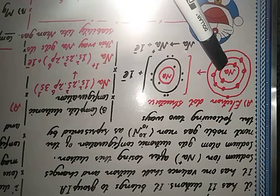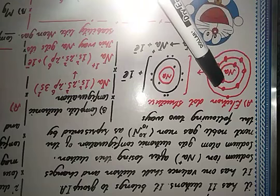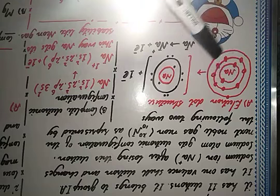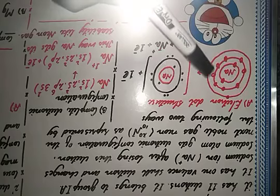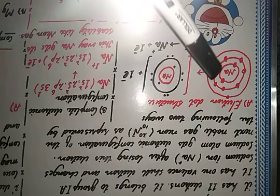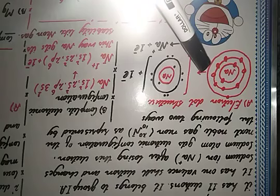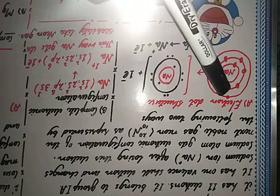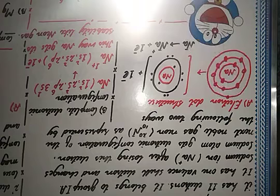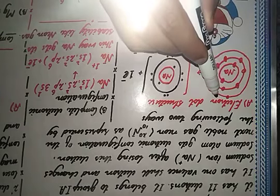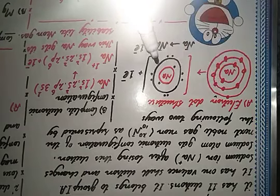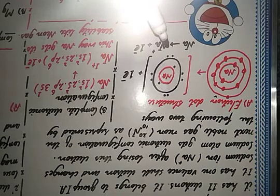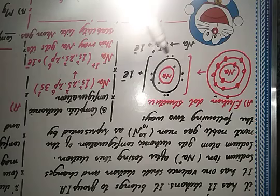The sodium atom has its K shell occupied by two electrons, the L shell has eight electrons, and the third shell has only one electron. During cation formation, the sodium atom loses this outermost electron. When it loses this electron it becomes a cation, and you represent this in the Lewis dot structure in the exam paper.